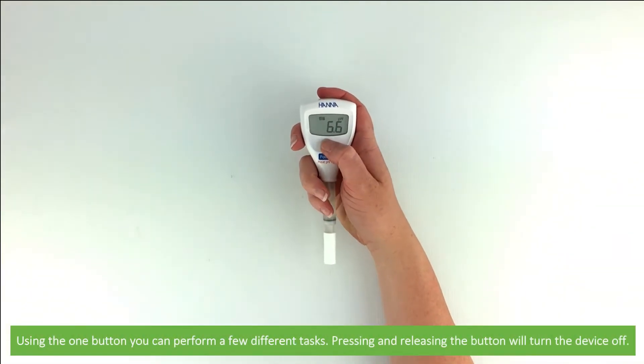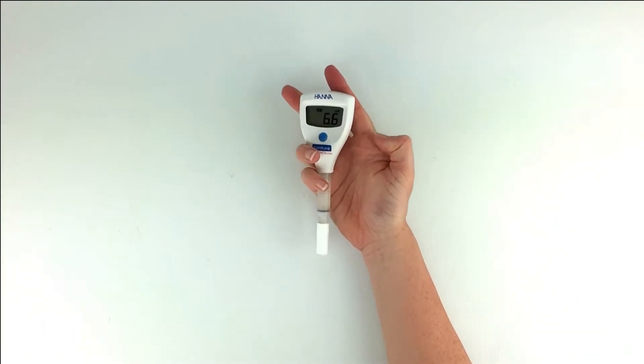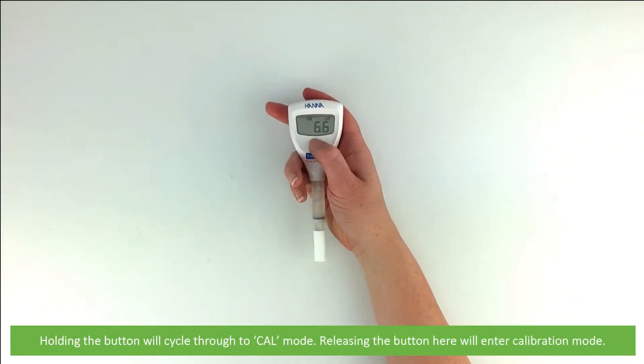Using the one button you can perform a few different tasks. Pressing and releasing the button will turn the device off. Holding the button down will cycle through to calibration mode. Releasing the button here will enter calibration mode.